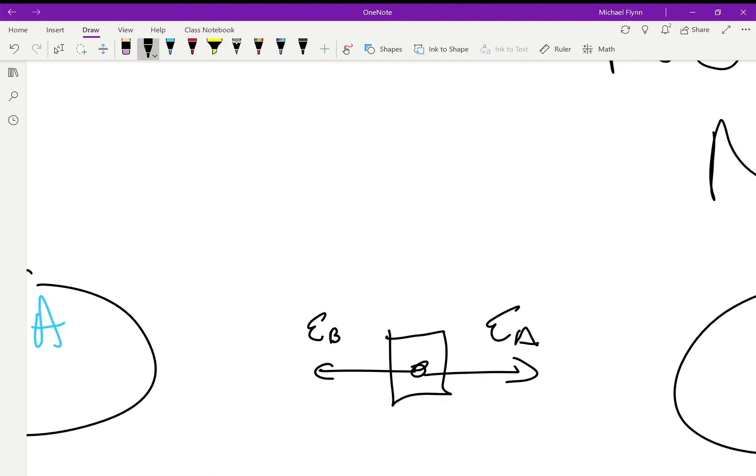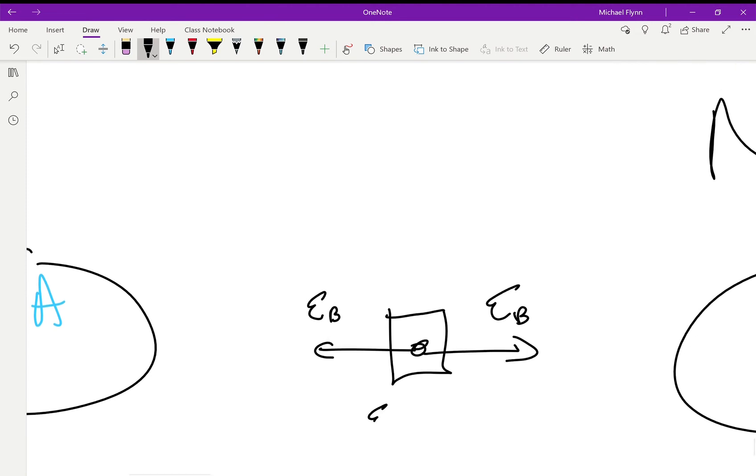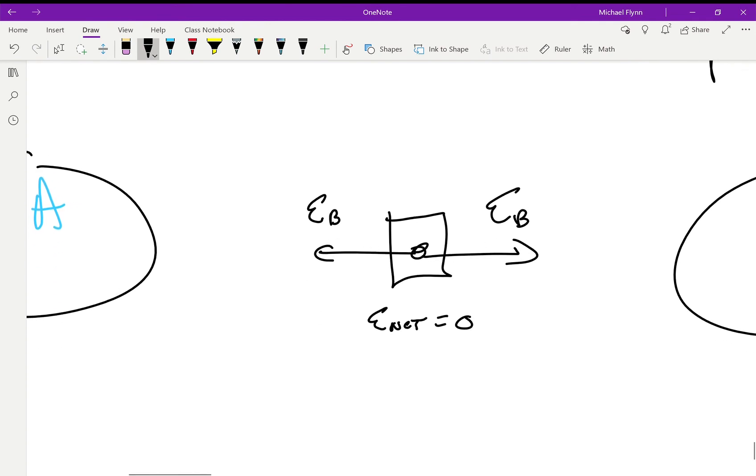So you're going to get A pushing it that way, and B is going to push it the other way. These things are going to cancel out because they're both the same magnitude and opposite direction. So the net, you can work it out if you want, but you're going to get zero.